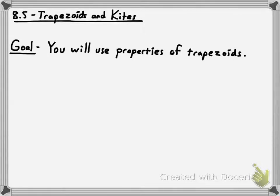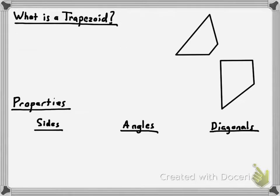So the goal is very straightforward. I basically need you to learn the properties about the sides, the angles, and the diagonals of a trapezoid, similar to the way that you'll learn the same for parallelograms as well as rhombuses, rectangles, and squares.